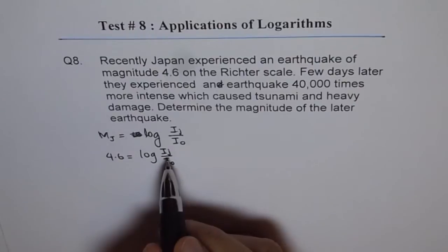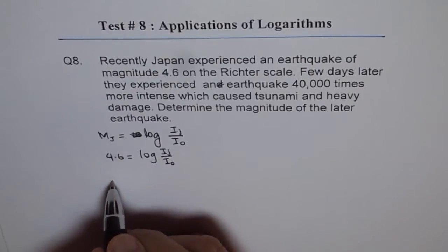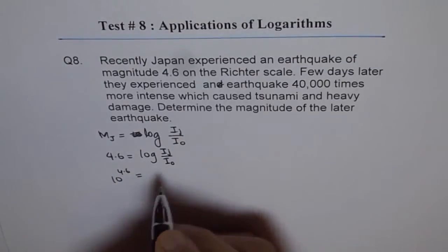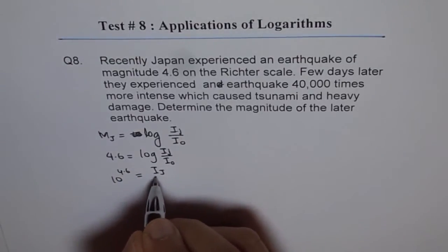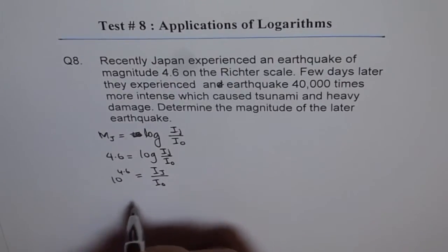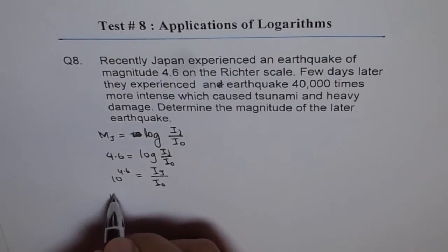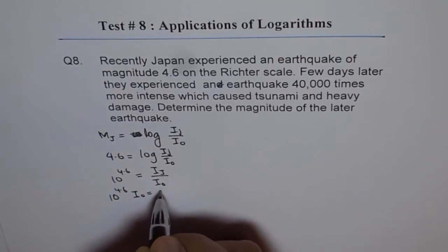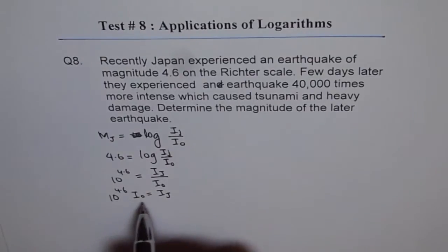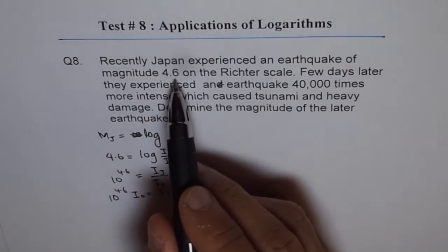From here we can find what Ij is. 10 to the power of 4.6 equals Ij over I0. So Ij equals 10 to the power of 4.6 times I0. That is the intensity of magnitude 4.6.